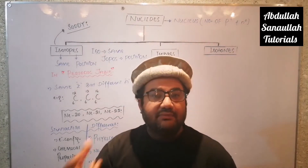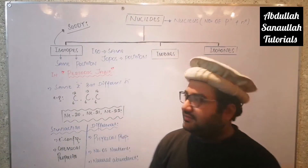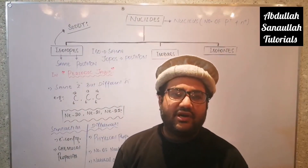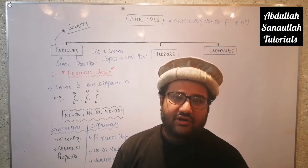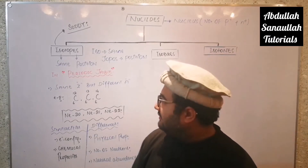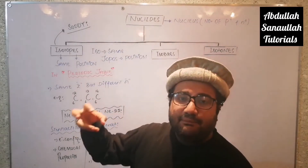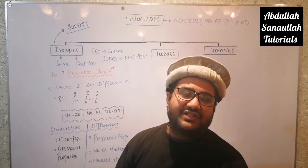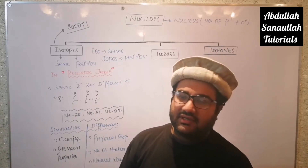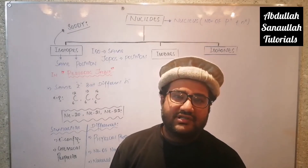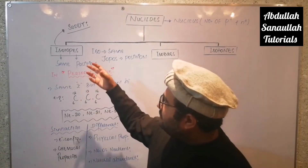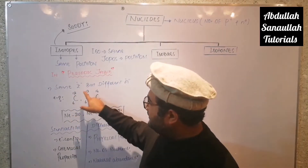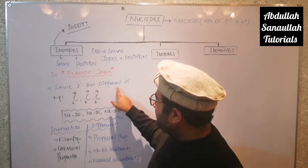Isotopes share only one place in the periodic table. Since the modern periodic table is organized by atomic number, isotopes can share the same place only if they have the same atomic number — meaning the same number of protons in their nuclei. So isotopes are atoms of the same element having the same atomic number but different mass number.